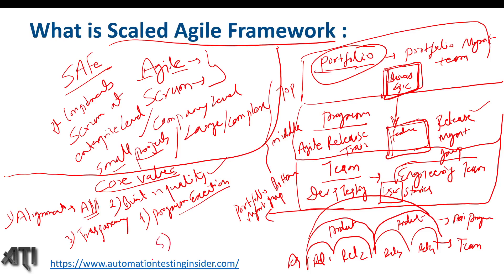The fifth core value is Leadership. It requires leadership behavior to follow the Scaled Agile Framework — a leader can change the system. So these are the five core values of SAFe: Alignment, Built-in Quality, Transparency, Program Execution, and Leadership.